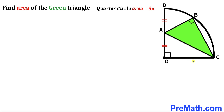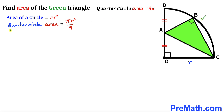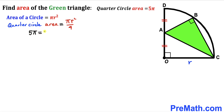Let me label the radius of this quarter circle as lowercase r. Our first task is to calculate the radius. Recalling the area of a circle formula: area equals π r squared. Since we are dealing with a quarter circle, the quarter circle area is π r squared divided by 4. Since the area has been given as 5π, we get 5π equals π r squared divided by 4. The π terms cancel, leaving r squared divided by 4 equals 5.